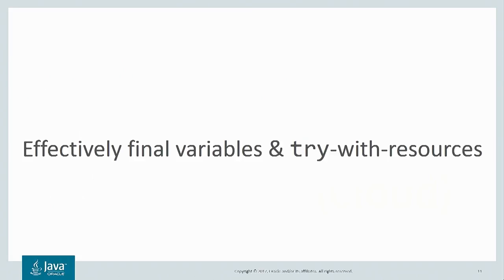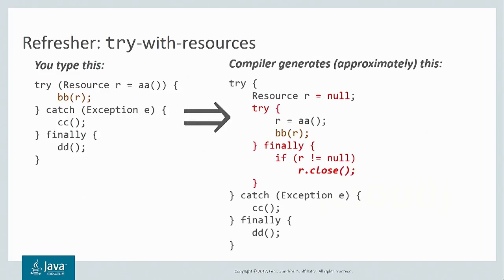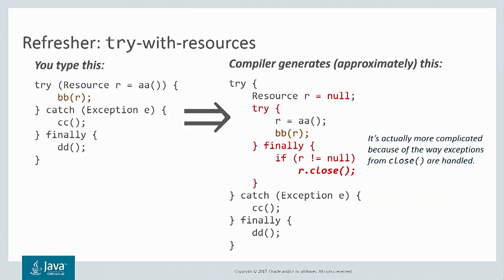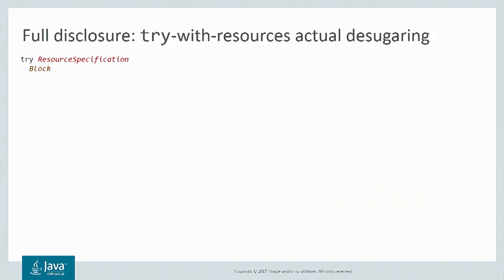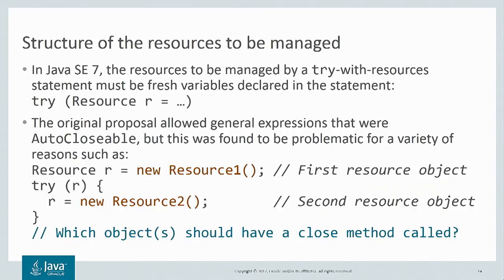Next, effectively final variables in try-with-resources. As a reminder, with the try-with-resources statement, you have a try block that manages your resource R. The compiler internally translates this into a class file roughly equivalent to one where there's a finally block wrapping the try, and in the finally block, close gets called on the resource as long as it's not null. It's actually a little more complicated than this to give better exception handling, but we don't have to worry about this as programmers because the compiler takes care of it for us.